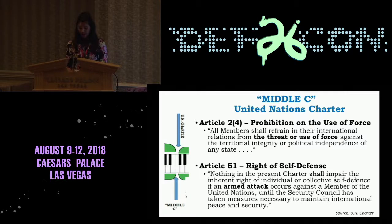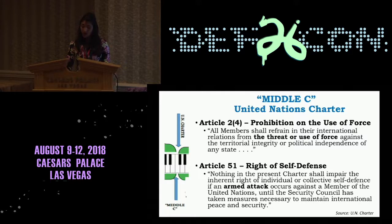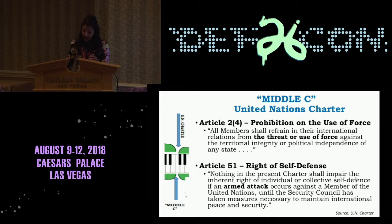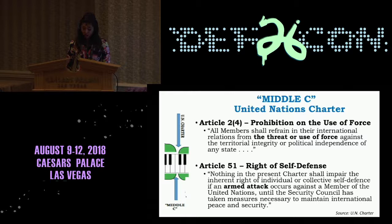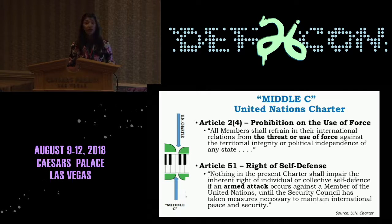Turning to the right of self-defense, how do we define an armed attack? We turn to our first case law, decided in 1986 by the International Court of Justice — Nicaragua versus the United States. The ICJ described armed attacks as acts which, because of their scale and effects — those are the key words — would have been classified as an armed attack rather than a mere frontier incident had it been carried out by regular armed forces. Thus, the scale and effects of an operation are requisite inputs for evaluating an armed attack, which in turn provides the legal basis for the victim state to respond under Article 51.